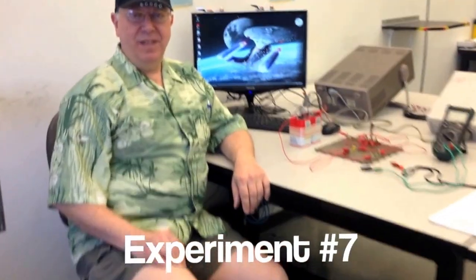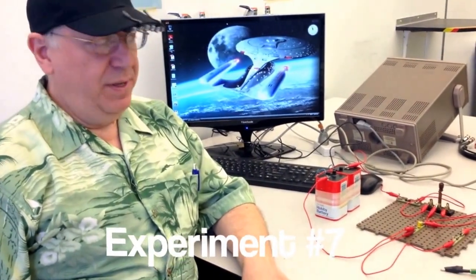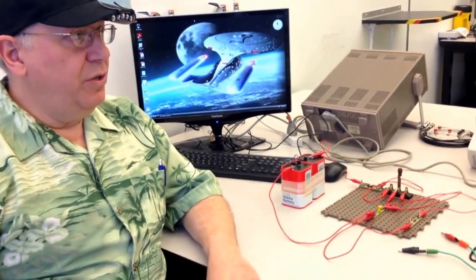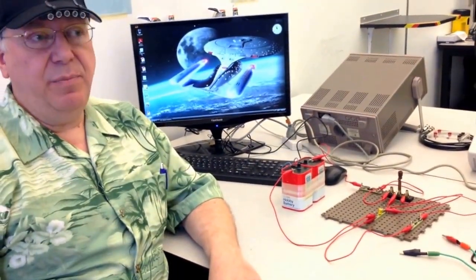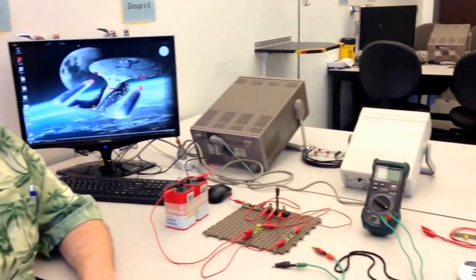Welcome back everyone. Today we're going to introduce you to experiment number seven. We are going to be using components called capacitors and we're also going to be introduced to two instruments, function generators and oscilloscopes.